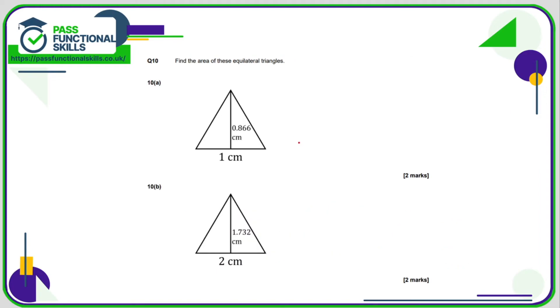So number 10, we are using a calculator here. So we want the area of the triangle. It doesn't really matter that they're equilateral. The formula for the area of a triangle is base times the height divided by 2. So it's going to be 1 multiplied by 0.866 divided by 2. And that comes to a total of 0.433 square centimeters.